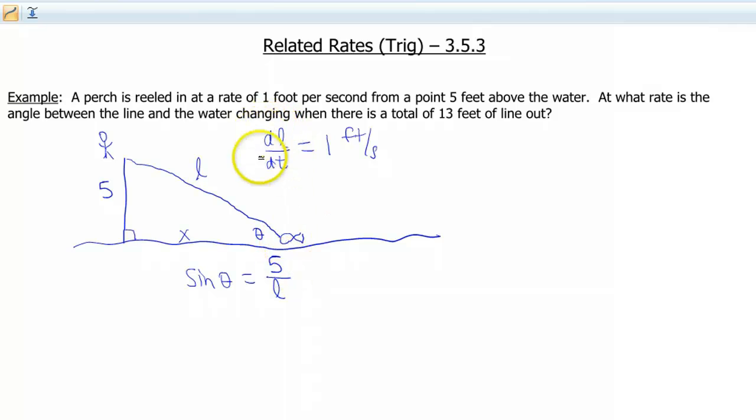Now we know we are given DL DT, and then we're trying to find at what rate is the angle changing. So remember, rate tells us that's a derivative. So we need to find D theta DT, and this is when L is 13. But do not plug this 13 in yet. If you do, you go to do the derivative, you're gonna end up with a 0. So you only wanna plug in at the very end. Same thing with our 1 foot per second. Plus we don't have any derivatives in here yet to be able to plug that into.